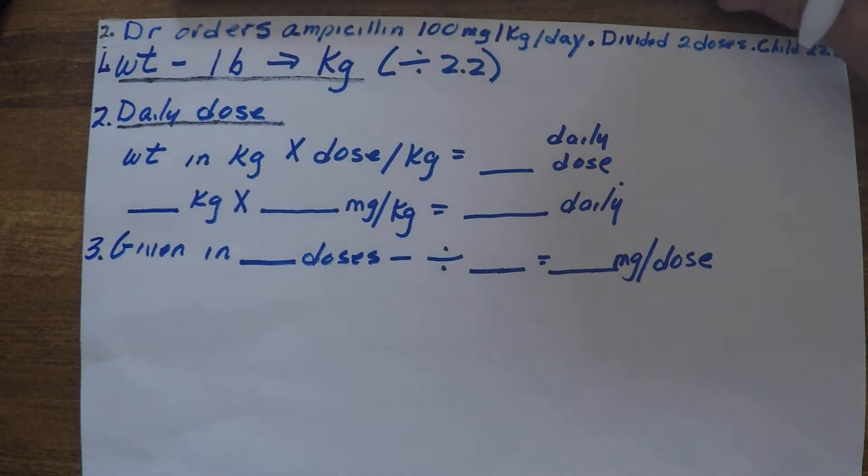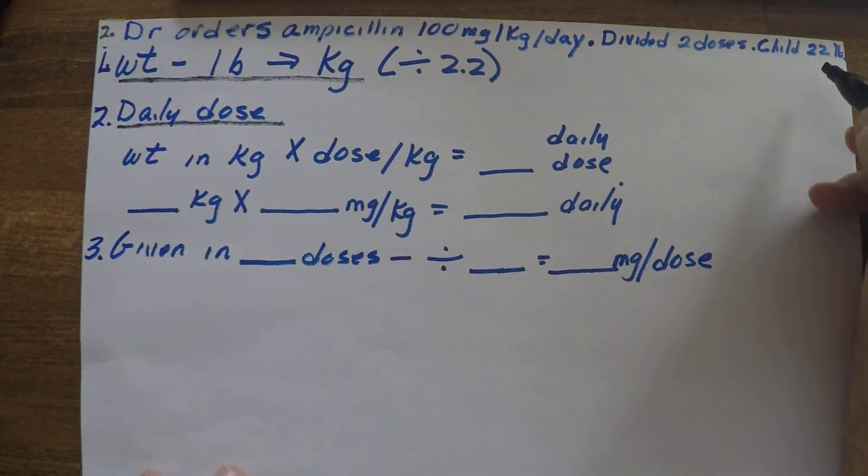All right, let's try another one here. So the physician's ordered amoxicillin 100 milligrams per kilogram per day, divided into two doses, and our child is 22 pounds.